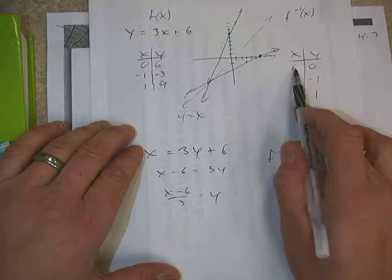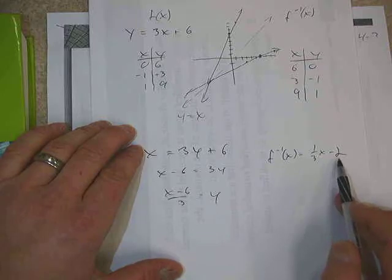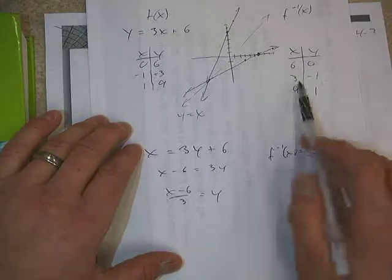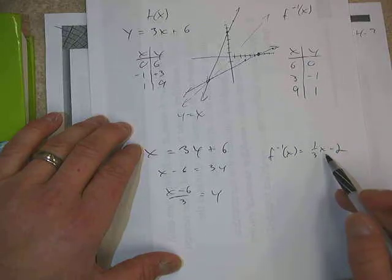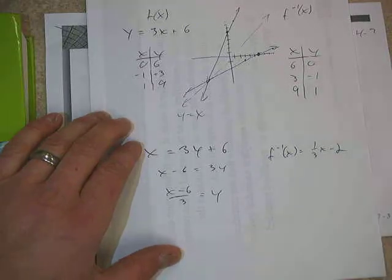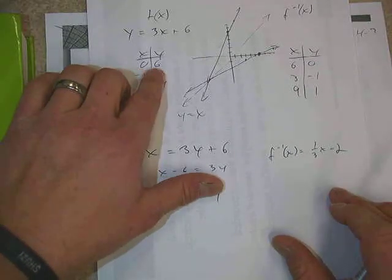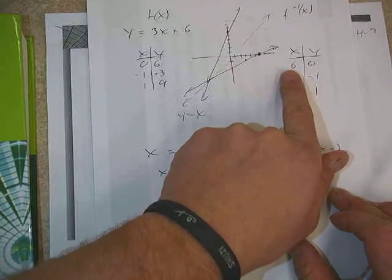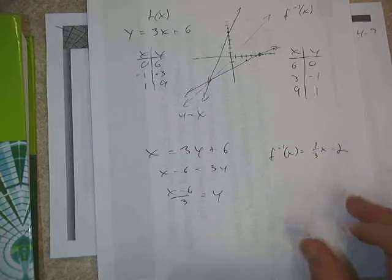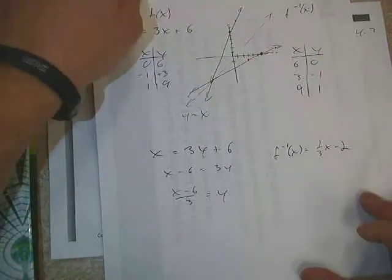Just to re-illustrate it one more time: if I put 6 into the inverse, I get one-third times 6, which is 2, and 2 minus 2 is 0. If I put 3 in, I'd get 1 minus 2, which is negative 1. And 9 in here gives me 3 minus 2, which is 1. So it does have that property: if I have a point (x, y) on the function, the point on the inverse is (y, x).